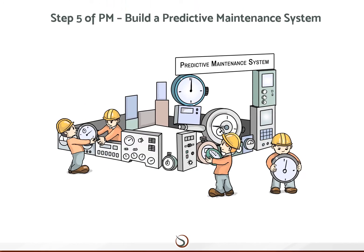The fifth step is about building a predictive or condition-based maintenance system. While unexpected failures decrease once periodic maintenance is established, they still occur and maintenance costs may increase. This is because periodic maintenance is time-based and assumes a hypothetical rate of equipment deterioration. Optimal service intervals cannot be set without measuring the extent of actual deterioration in individual items of equipment. To address this problem, we need a condition-based maintenance system in place, which would allow us to identify which equipment or component needs to be maintained immediately.